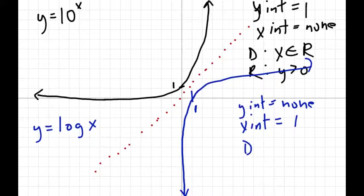and our domain and range also get reversed, so our domain will be x is greater than zero this time, and our range will be y is any real number. And it'll always work like that for any graph, doesn't matter what the numbers are, you'll always get the similar type of features for the graph.